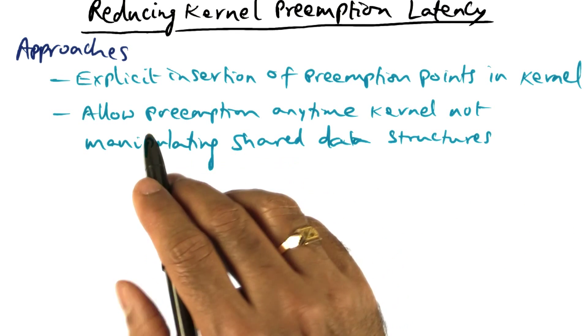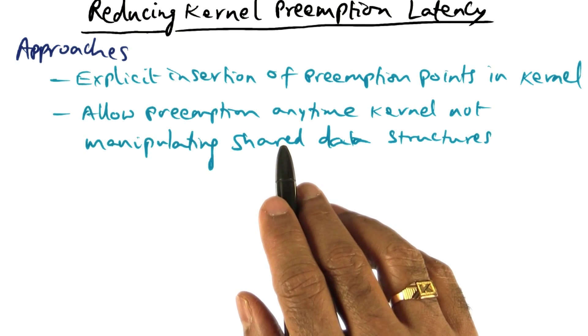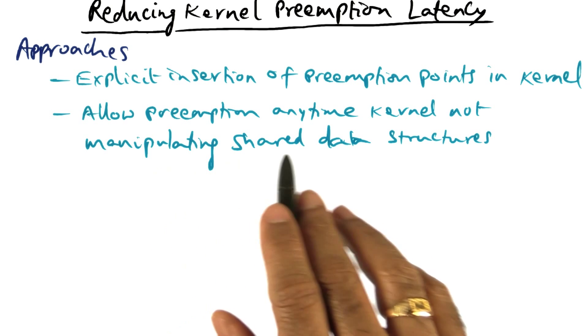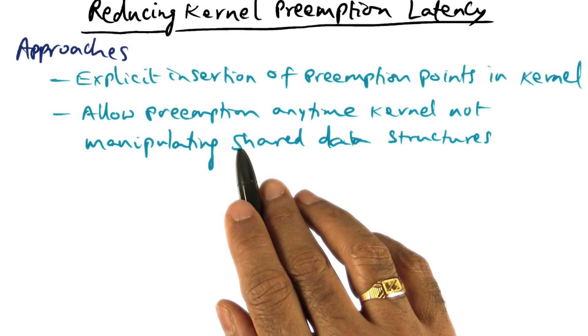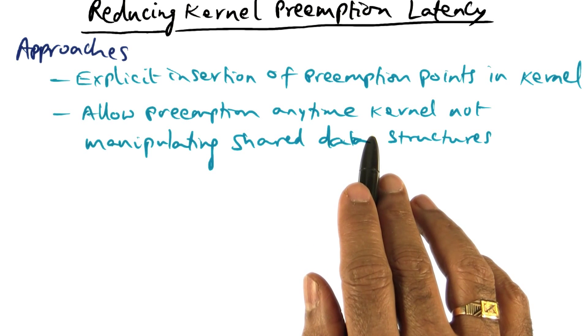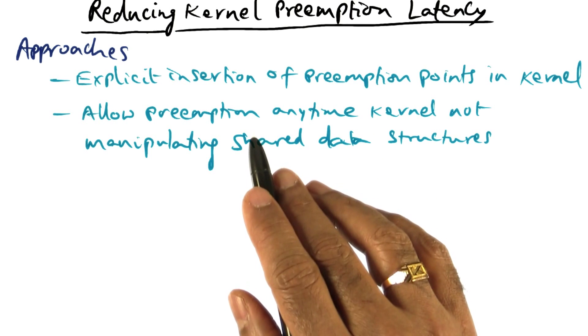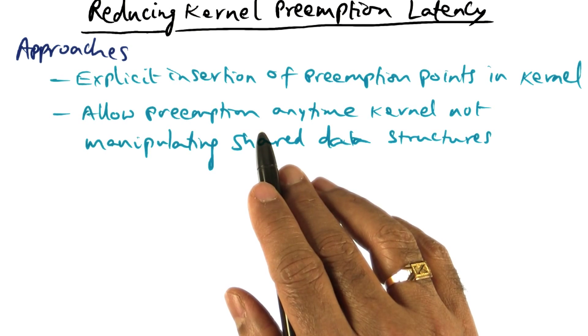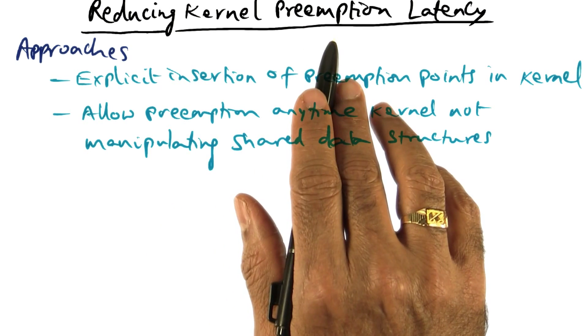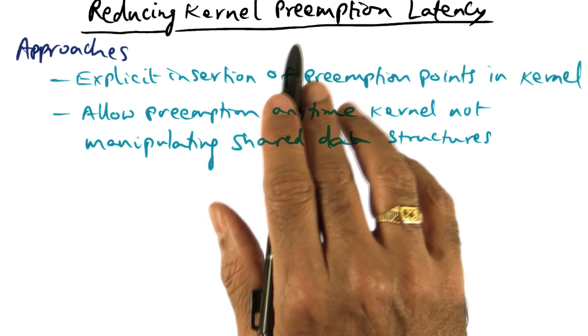So what we want to do is make sure that the kernel is not preempted while it is manipulating shared data structures. But if it is not, then we will allow preemption. So these are two different approaches that can be combined in order to reduce the latency associated with kernel preemption.